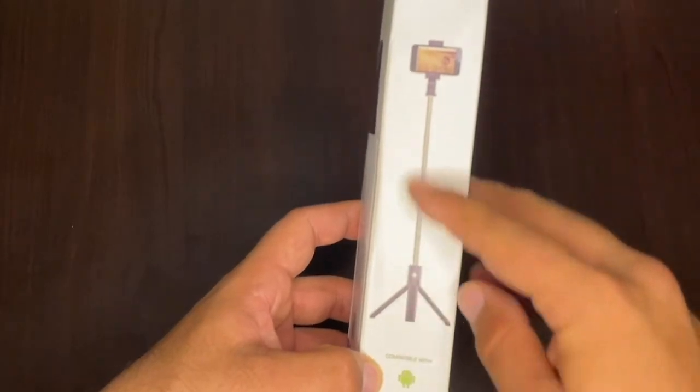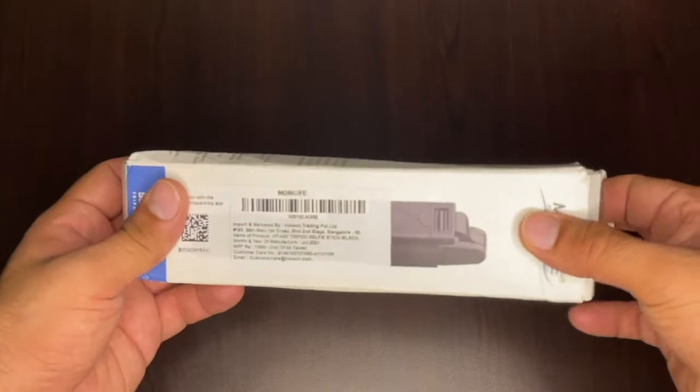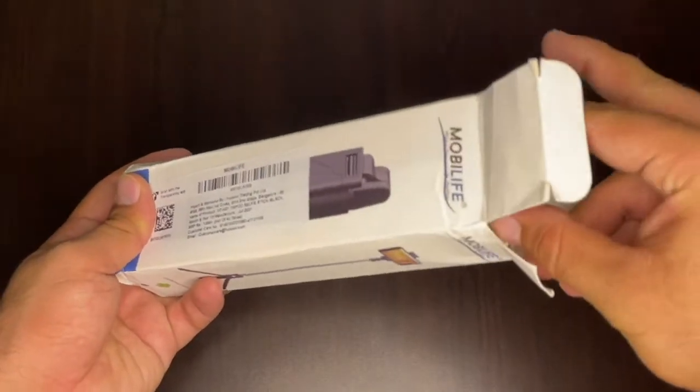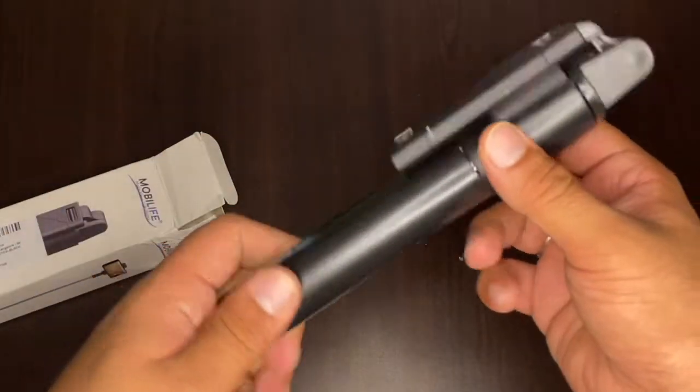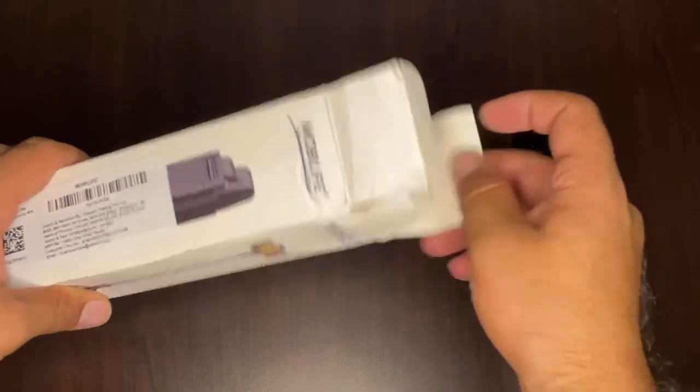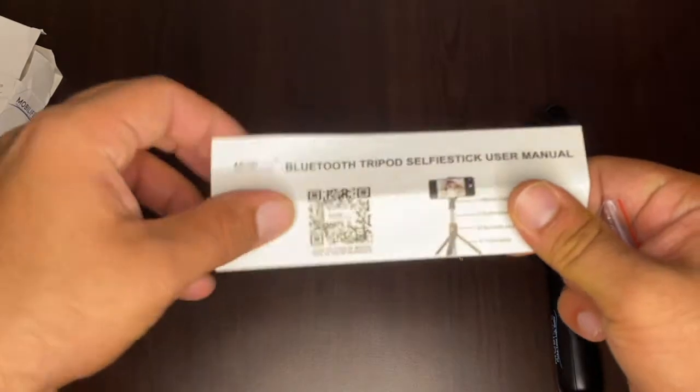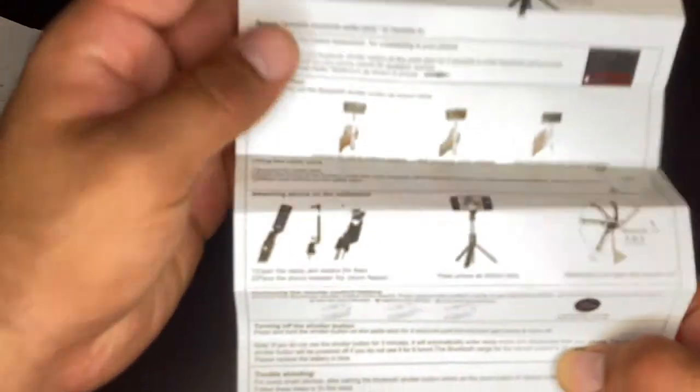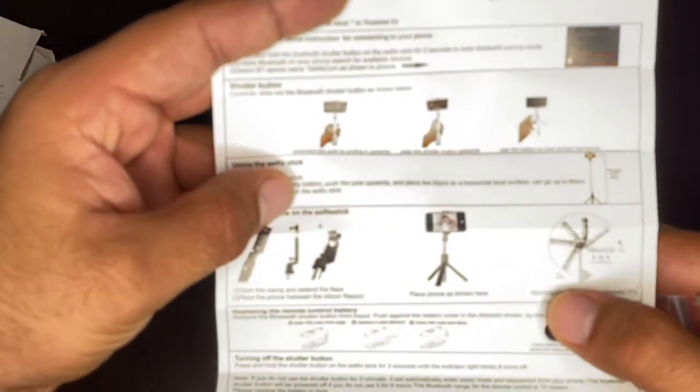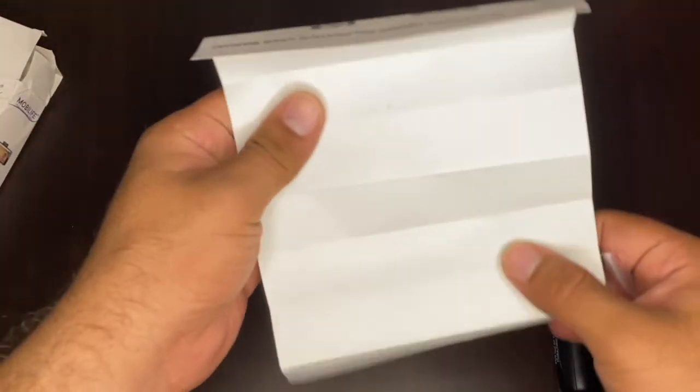This is how it looks when you make it a tripod. And this is the selfie stick. I will unbox it quickly and I will show you what the items are in it. This is the selfie stick.